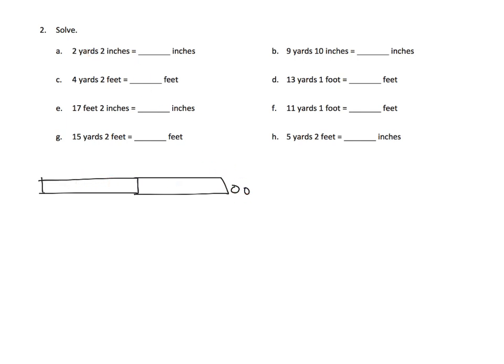Well, each of these yards is thirty-six inches. So there's thirty-six inches. Here's thirty-six inches. Plus we have two more inches. So all we have to do is add thirty-six plus thirty-six plus two. So that's seventy-four inches. So we know that seventy-four inches goes right there.